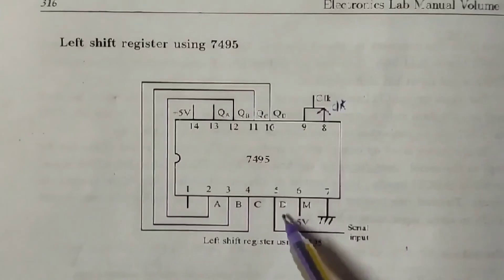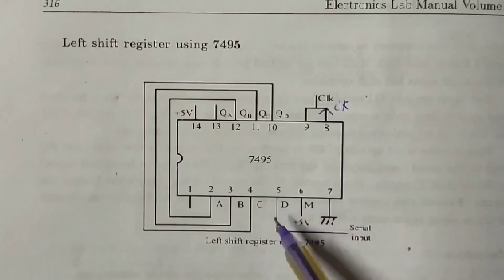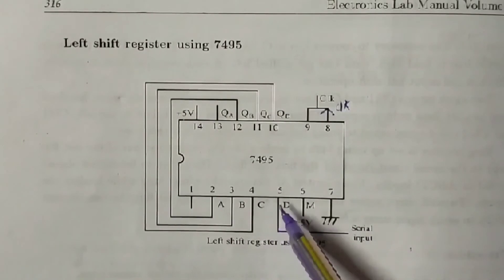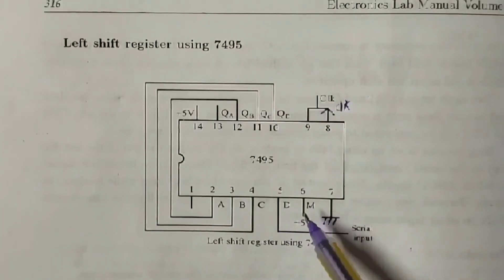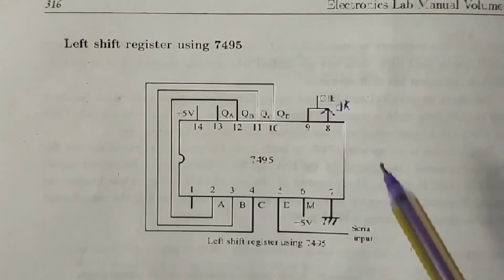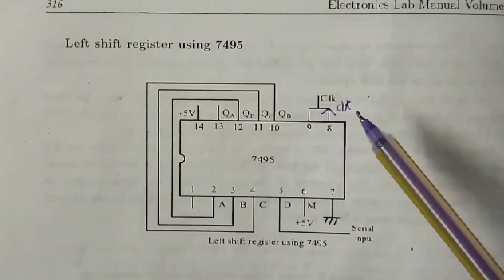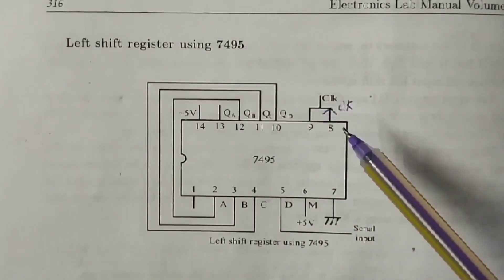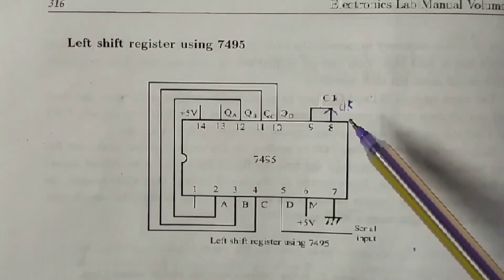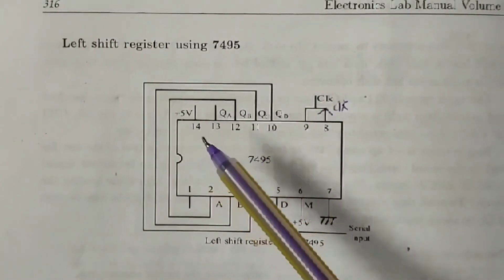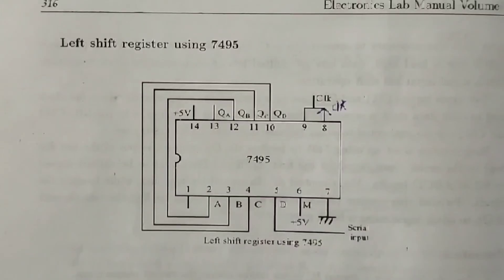Another difference is that input is given at pin 5. Pin 6, the mode control pin, is given logic 1 (high state) for the left shift register, whereas it was logic 0 for the right shift register. Pin 7 is grounded. Clock input is given at pin 8, not pin 9 — in the right shift register clock was at pin 9 with pin 8 free. Pin 14 is given VCC.